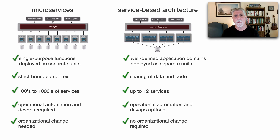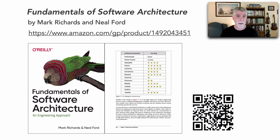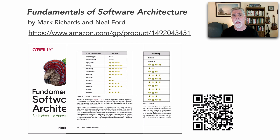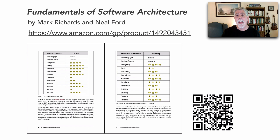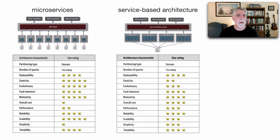Those are some of the core structural differences, but I also want to talk about the operational characteristics between these. In our book Fundamentals of Software Architecture, we talk in depth about each of these architecture styles and have star ratings. If we flip the page, we see star ratings for both microservices on the left and service-based architecture on the right in chapter 13. One star means it's not very well supported; five stars means it's excellent and well supported within that architecture.